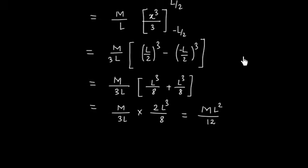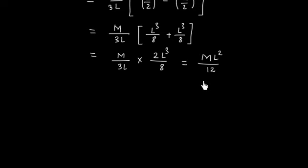So the moment of inertia of a rod about an axis passing through the center of mass and perpendicular to the rod is ML²/12. The moment of inertia about OO' axis is ML²/12.